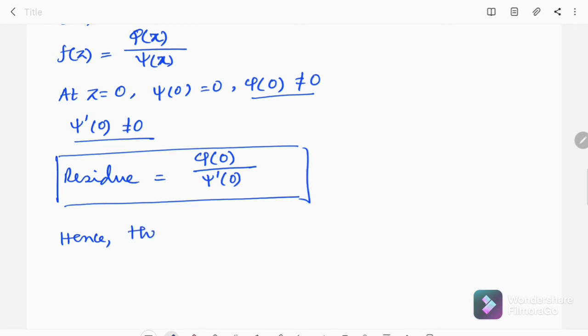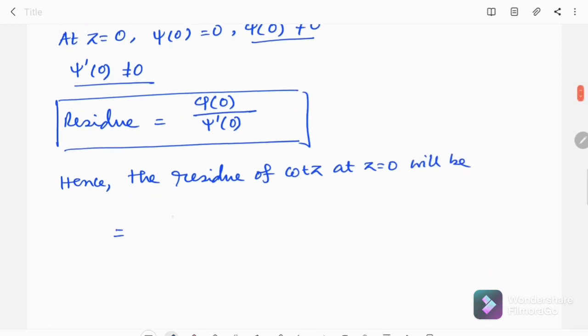Hence, the residue of cot z at z equal to 0 will be cos 0 divided by cos 0. Ultimately, I am getting it 1.